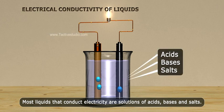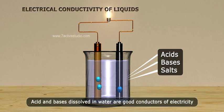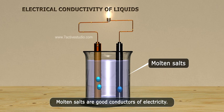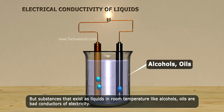Acids and bases dissolved in water are good conductors of electricity. Molten salts are good conductors of electricity, but substances that exist as liquids at room temperature, like alcohols and oils, are bad conductors of electricity.